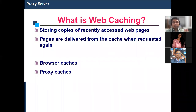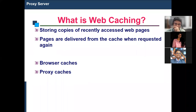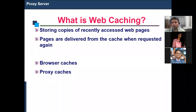Pages are delivered from the cache when the same content is requested again. Your machine has the capacity to store all those pages, so they are retrieved locally rather than going to the server every time. If the server is targeted every time, load increases and the process slows down — that is why caching was introduced.